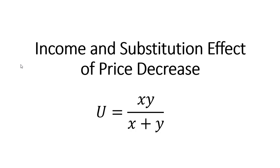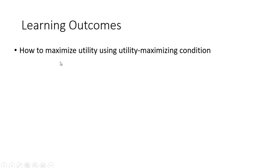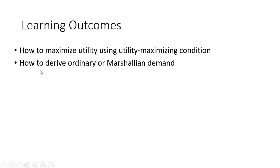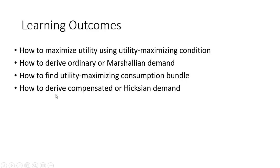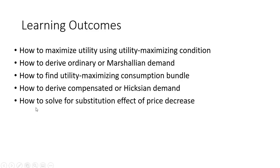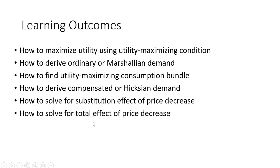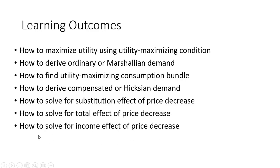Hello, in this video we're going to look at the income and substitution effect of a price decrease using a specific utility function. Things we'll learn: how to maximize utility using a utility maximizing condition, how to derive ordinary or Marshallian demands, how to find the utility maximizing consumption bundle, how to derive compensated or Hicksian demands, how to solve for the substitution effect, the total effect, and the income effect of a price decrease.